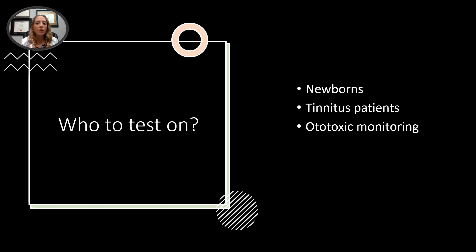So who do we test? Newborns — this is a really good way to tell if a newborn has hearing loss. Obviously newborns can't tell us if they hear a sound, so the ear is doing all the work. You send information to the hair cells, and if the hair cells send information back, it shows that they aren't damaged and are working properly.